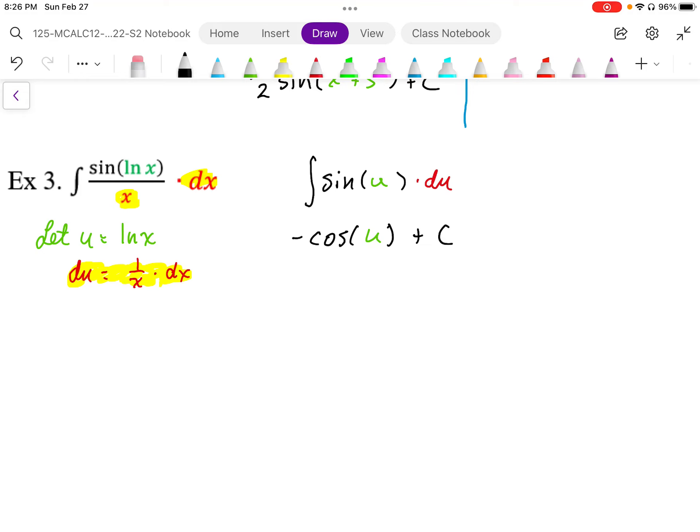And then we want to express this with an x. So we're going to replace the u with the original ln x. And this is the anti-derivative of the original function.